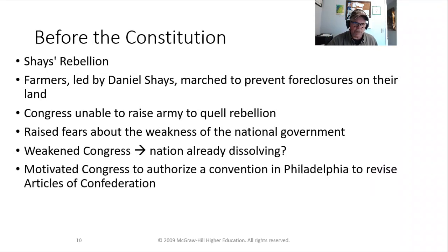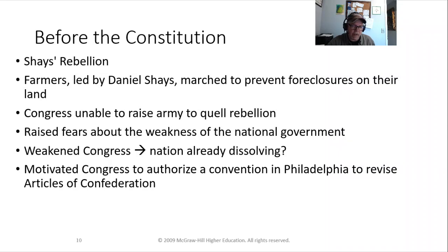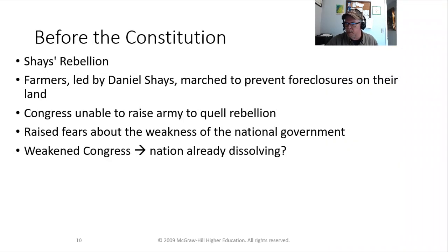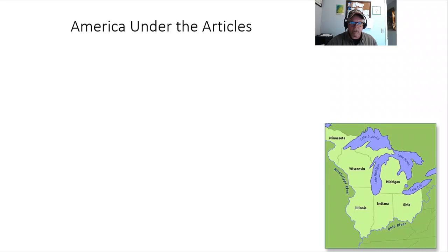That pushed them to act. There was actually a meeting before the Constitutional Convention, and then the actual convention in Philadelphia, where people slowly came together to address the problem. The original idea was just to revise and modify the Articles, but instead they threw them out and basically started from scratch — though at least now they knew what wouldn't work, so the Articles were helpful in that sense.